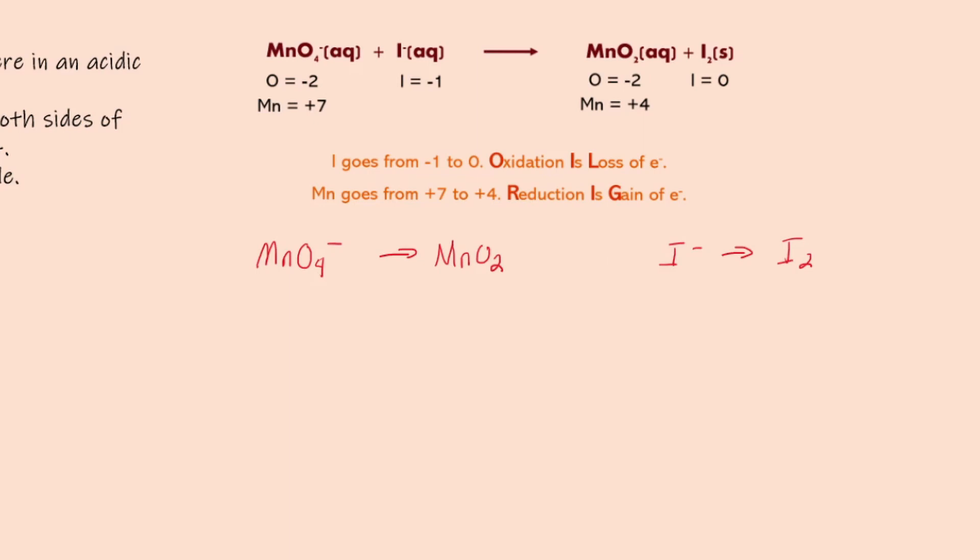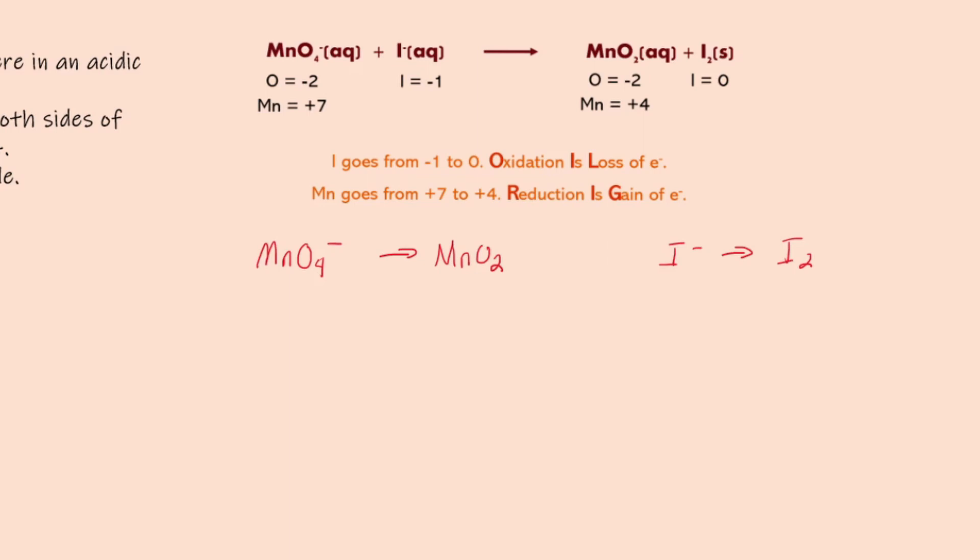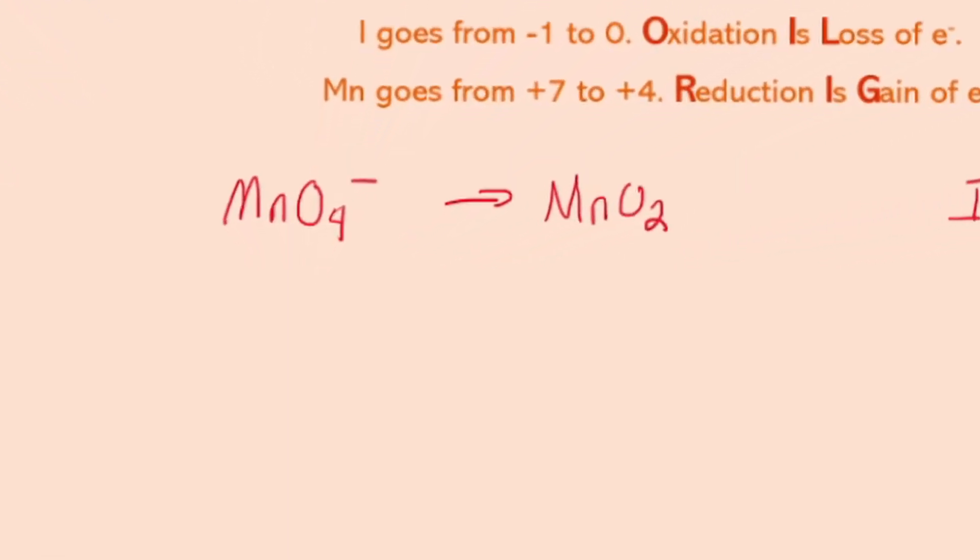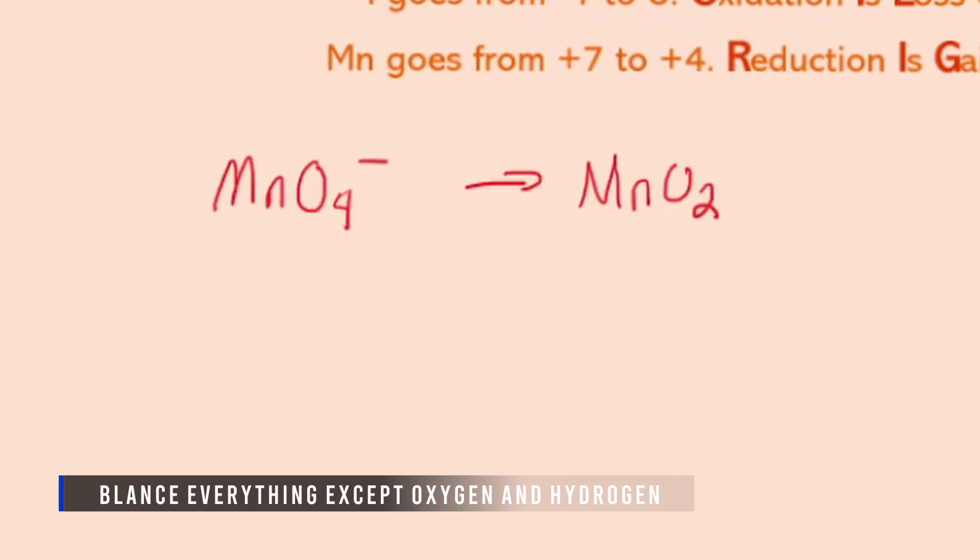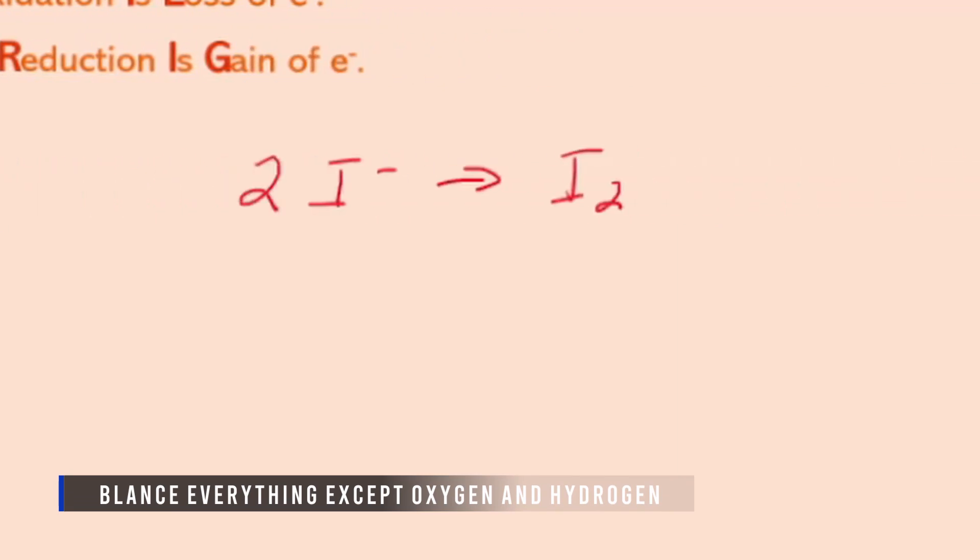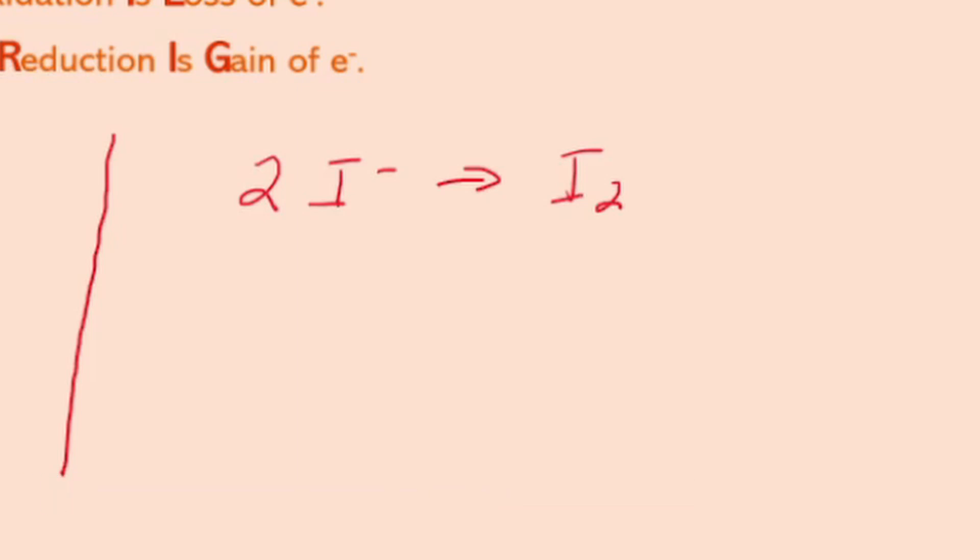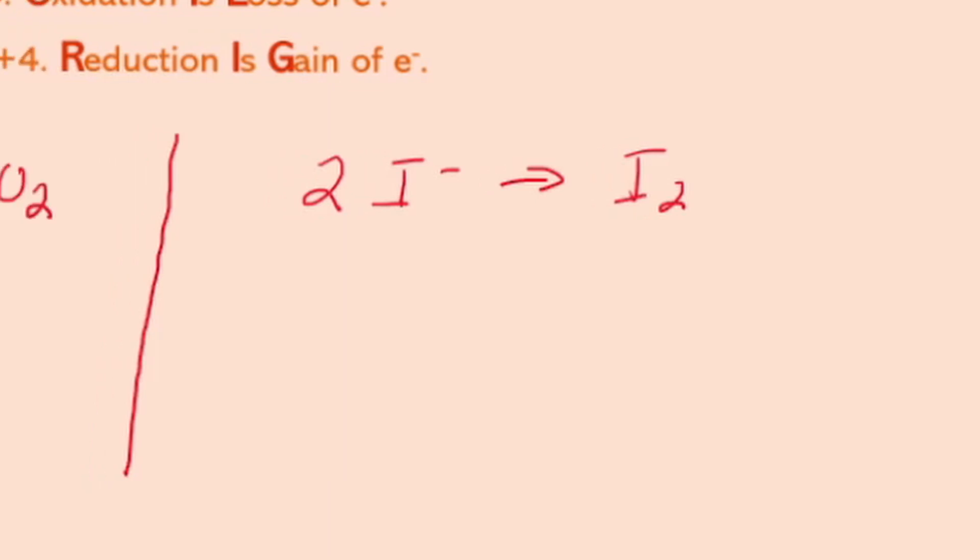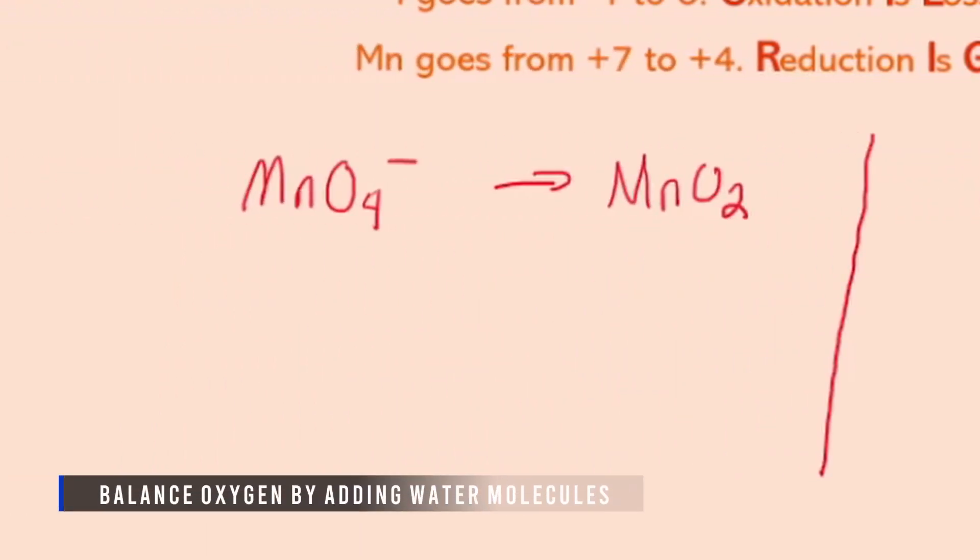So let's go down here and just go ahead and follow the steps. We know we need to first balance our species other than oxygen and hydrogen. In this case I'm balanced on one manganese one manganese here. I need to add a coefficient to balance, and let's divide these up so we don't get them mixed up. So I need to add a coefficient to balance my iodine and then I need to balance my oxygen by adding waters and so in this case here I need to add...